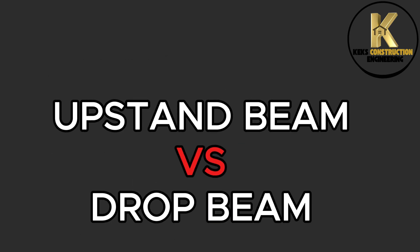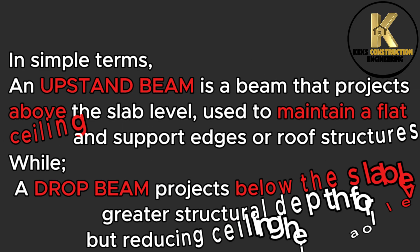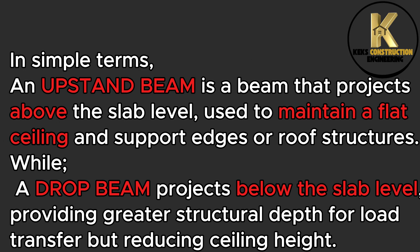Let's differentiate between an upstand beam and a drop beam. In simple terms, an upstand beam is a beam that projects above the slab level, used to maintain a flat ceiling and support edges or roof structures. A drop beam projects below the slab level, providing greater structural depth for load transfer but reducing ceiling height. Drop beams are commonly used in construction.